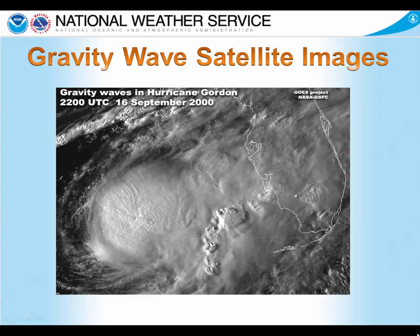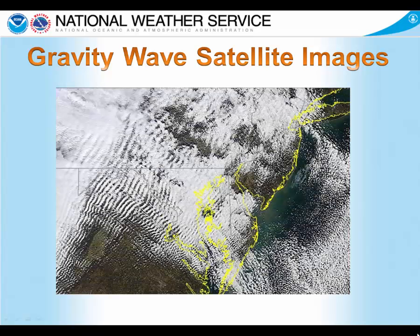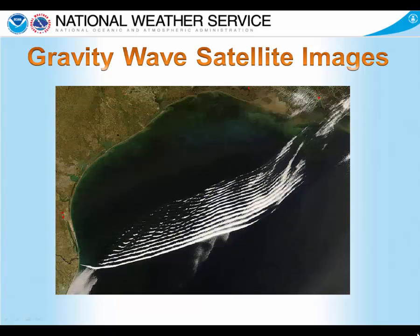First, here's Hurricane Gordon in the southeastern Gulf of Mexico. You can see the ripple effect on the top of the thunderstorms that are really tall as they bump up against the stratosphere. Next is an example of gravity waves caused by wind flow over the tops of mountains. Finally, here's a look at some low-level gravity waves in the western Gulf of Mexico — again, you can see the ripple effect similar to what you might see in a pond or an ocean.